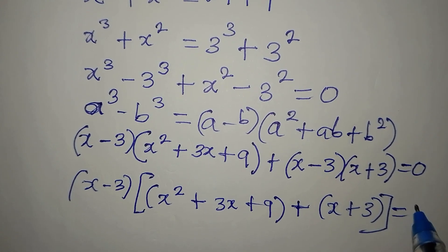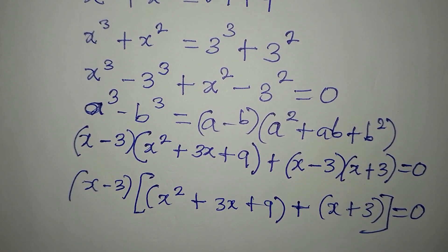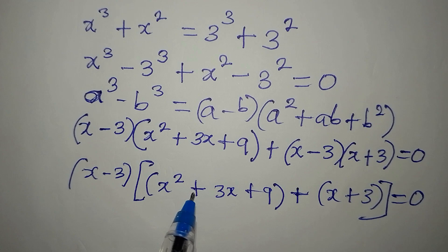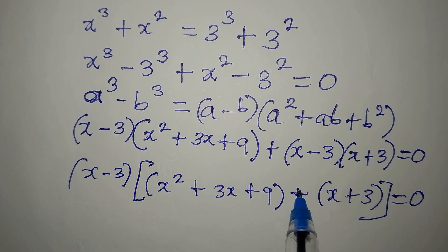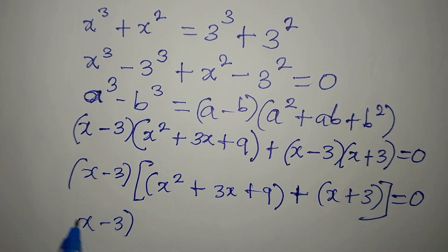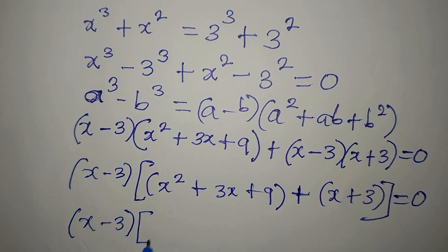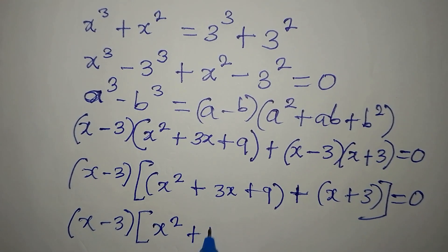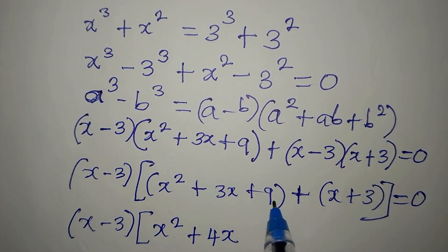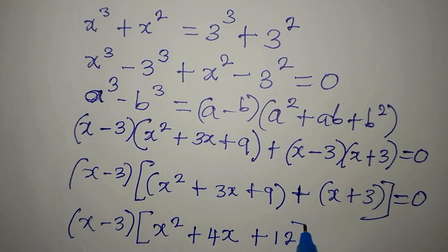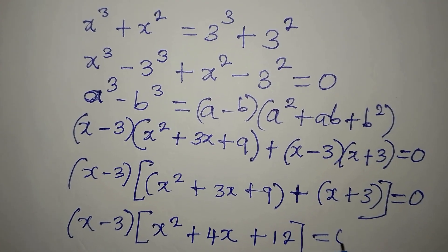Now (x minus 3) is a common factor across both terms, so we take it out. Inside the bracket we have x squared plus 3x plus x plus 3 from the two expansions, and combining like terms: 3x plus x is 4x, and 9 plus 3 is 12. So we have (x minus 3)(x² plus 4x plus 12) equals zero.